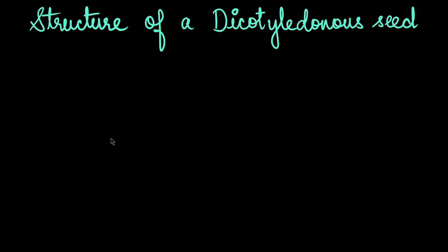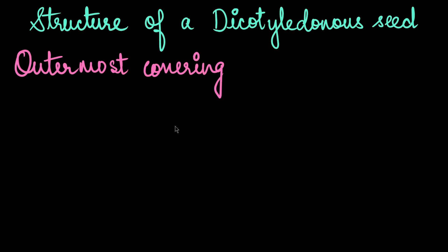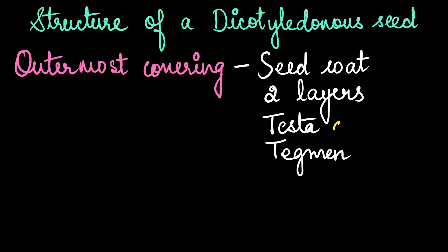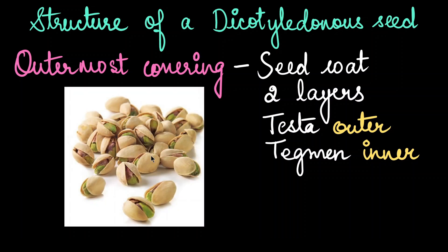Let's start with the structure of a dicotyledonous seed. The outermost covering of a dicot seed is the seed coat, which has two layers: testa and tegmen. Testa is on the outside whereas tegmen is on the inside. You might be wondering how come you have never noticed two distinct seed coats in chickpea. That's because in most cases it's not very evident, but when you look at pistachios they're quite evident. The hard shell is actually the testa and the papery structure inside it is the tegmen.